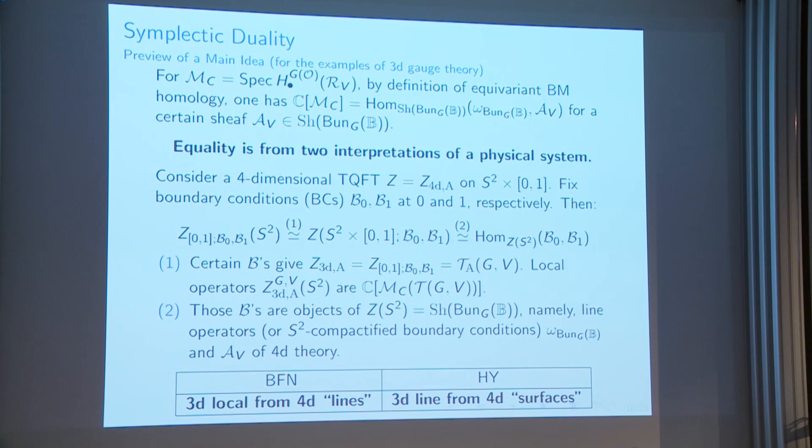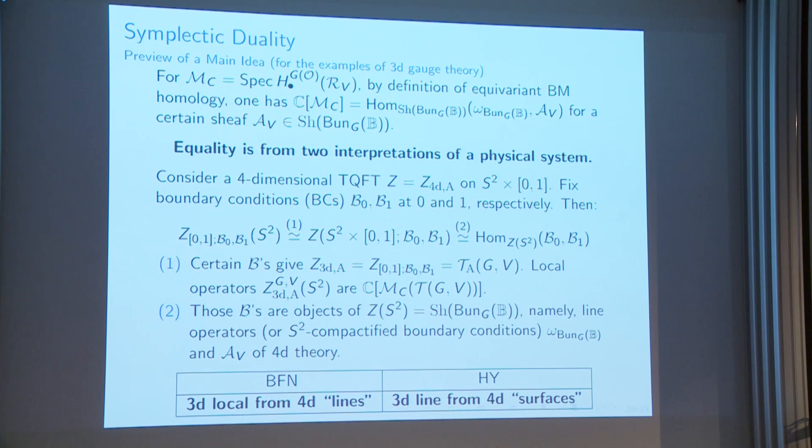This is really the work of BFN, and our interpretation is: 3D local operators (Coulomb branch) come from this 4D line operators perspective. Given this, you can try to understand 3D line operators from 4D surface operators — that's at least one piece of the idea.